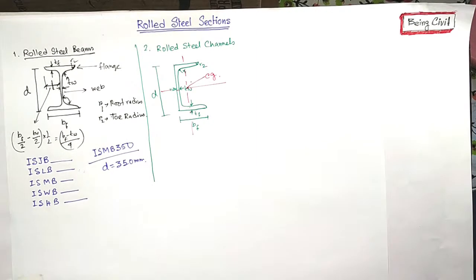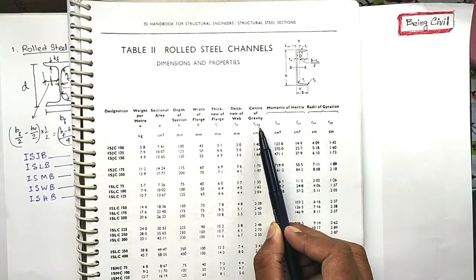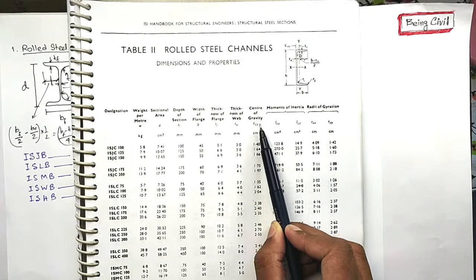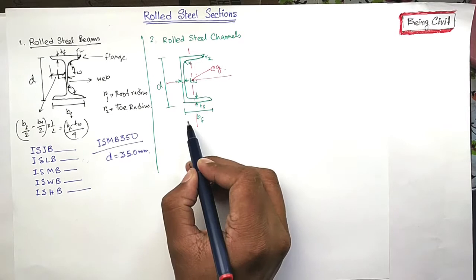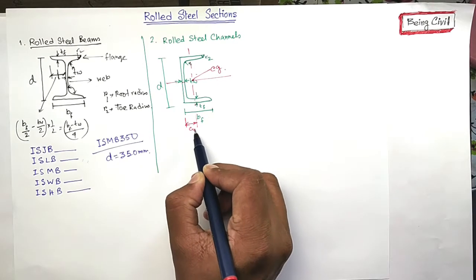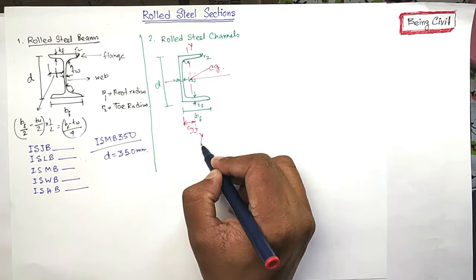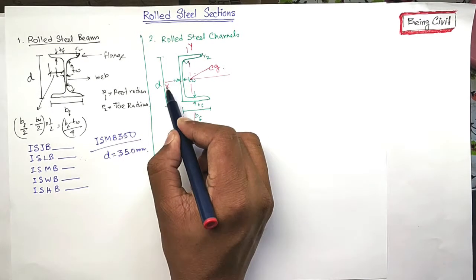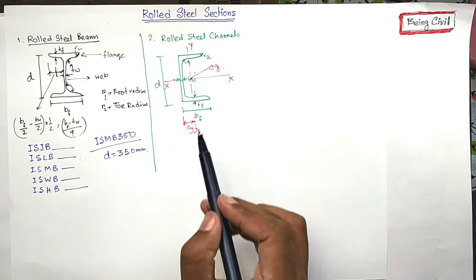Let us have a look. This is the channel section table. And you can find the center of gravity, here it is showing CYY. CYY means this distance. This is YY axis, this is XX or you can say ZZ axis.